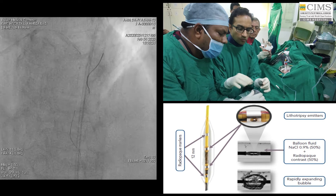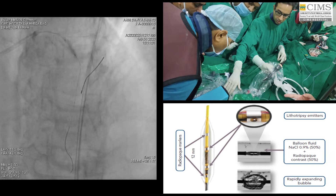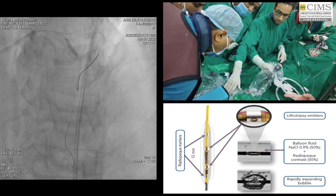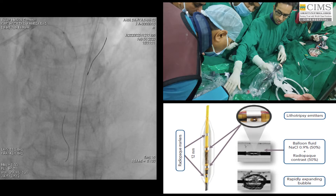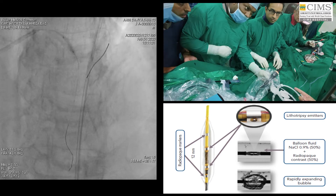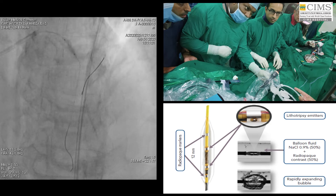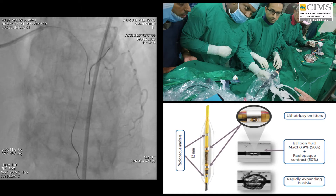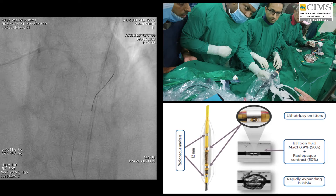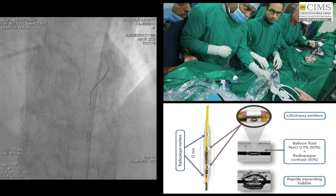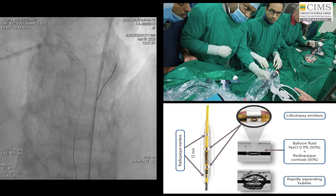Inside the balloon are lithotripsy emitters. The balloon is filled with a 50/50 mixture of saline and contrast. Once inflated you will see a rapidly expanding bubble. We now advance the balloon and start generating impulses using the generator. The balloon is inflated at 4 atmospheres and an impulse is generated. Each balloon has 10 impulses per cycle and up to 8 cycles. We will start doing lithotripsy of the artery, beginning distally then moving proximally, where multiple inflations and multiple cycles will be performed over the areas of calcium.